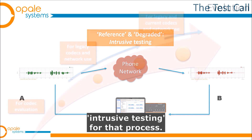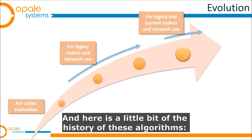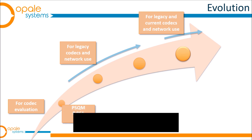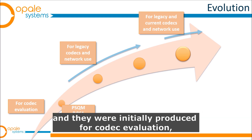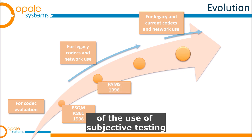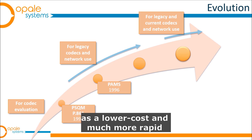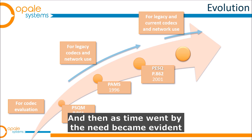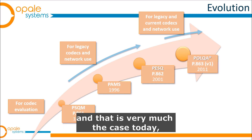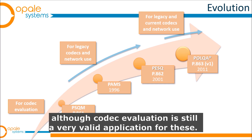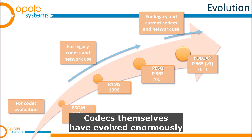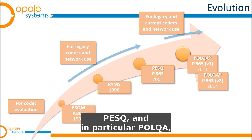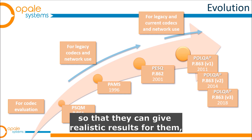Here's a little bit of the history of these algorithms. Looking at their purpose and how that's changed over the years, we start around 1996 — though there was development for some years before that. They were initially produced for codec evaluation, as that was the biggest part of the use of subjective testing. Objective testing was designed as a lower-cost, more rapid, and repeatable way of predicting those results. As time went by, the need became evident to use these techniques for network testing as well, which is very much the case today.